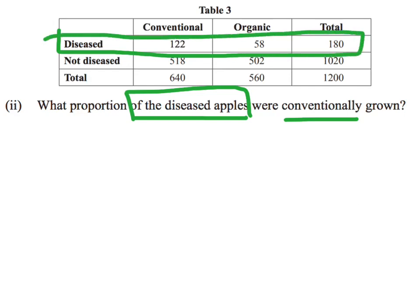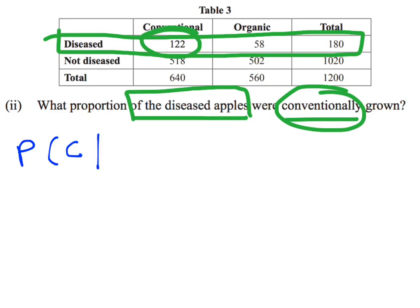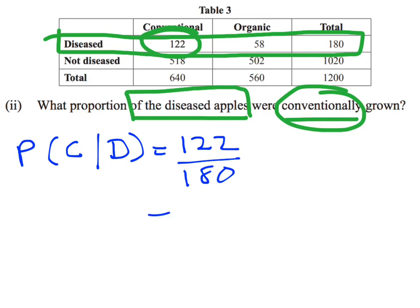So from the diseased apples, what proportion of those were conventionally grown? Conventionally grown — there's the 122 out of the 180 diseased apples. So this is a conditional probability. We can say: what's the probability of a conventionally grown apple given that it has a disease? And that probability is 122 over 180, or you can write that as a decimal, 0.68. Question 3.